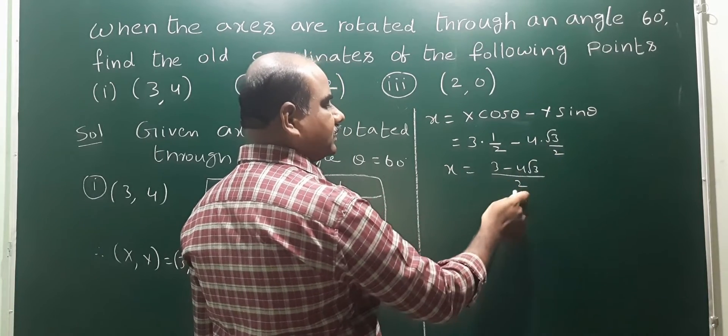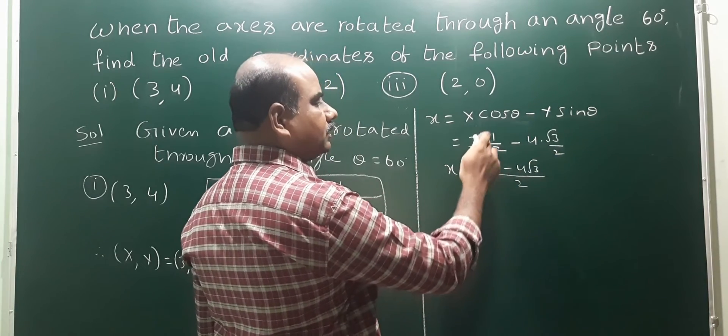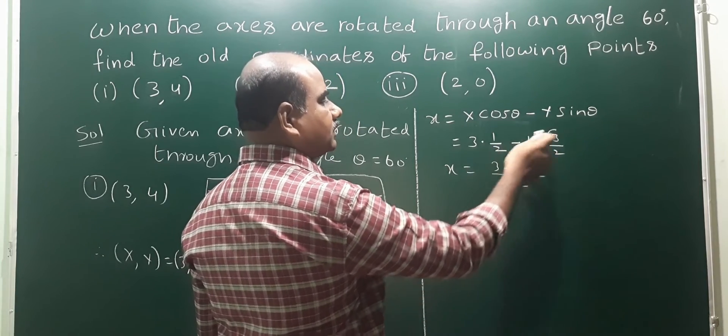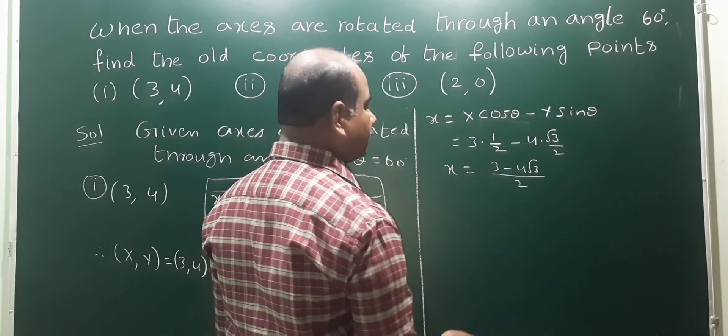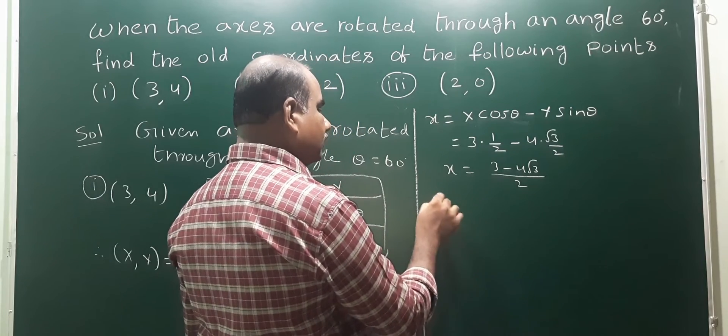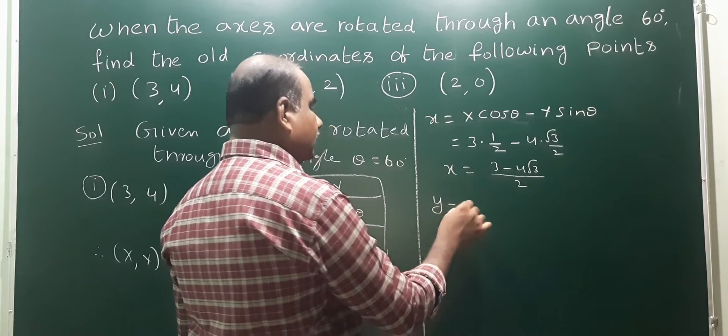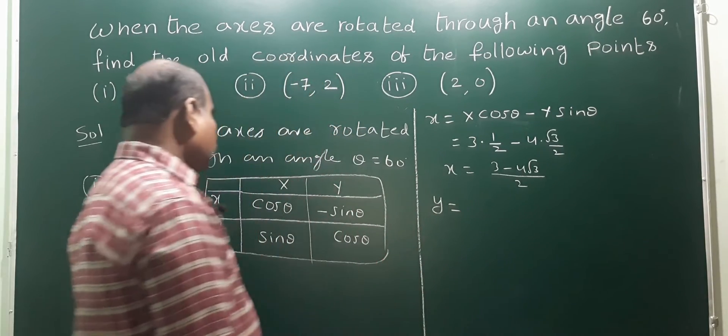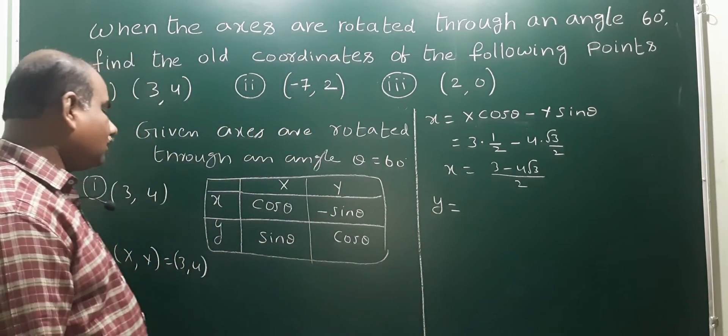Taking LCM as 2, the value of small x is (3 minus 4 root 3) by 2. Next, small y equals X·sin theta plus Y·cos theta.